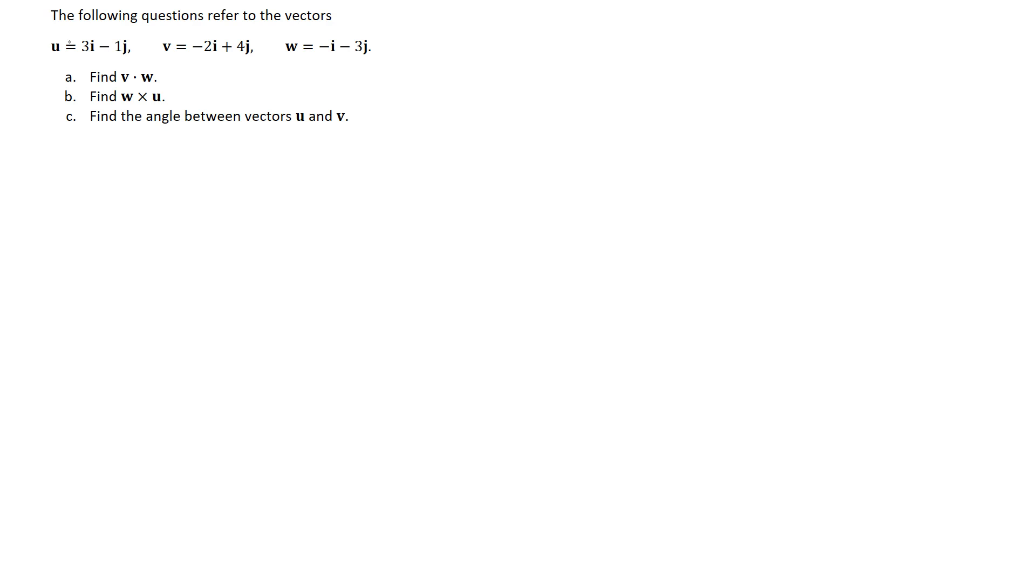So here we're given three different vectors u, v and w and we're asked to do three different calculations. So for the first one we're asked to find v dot w which is of course the dot product between those two vectors.